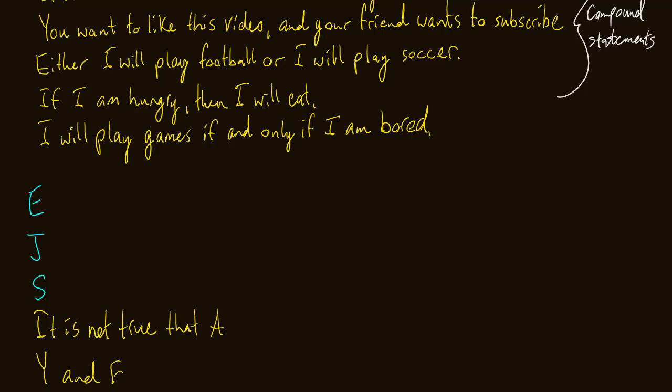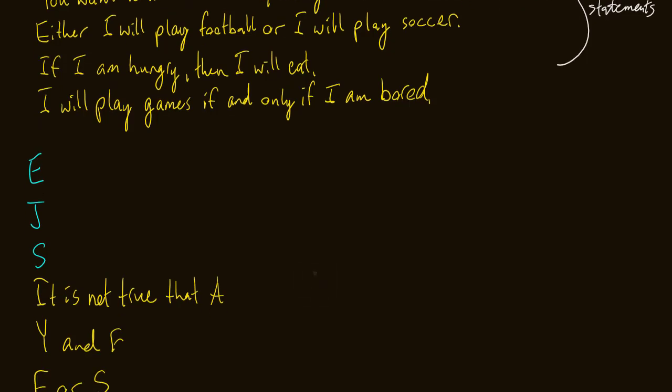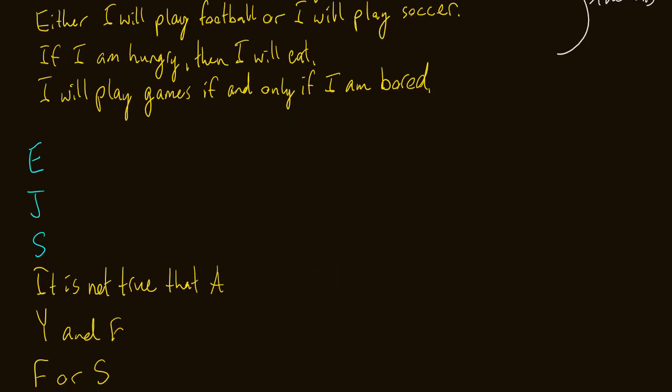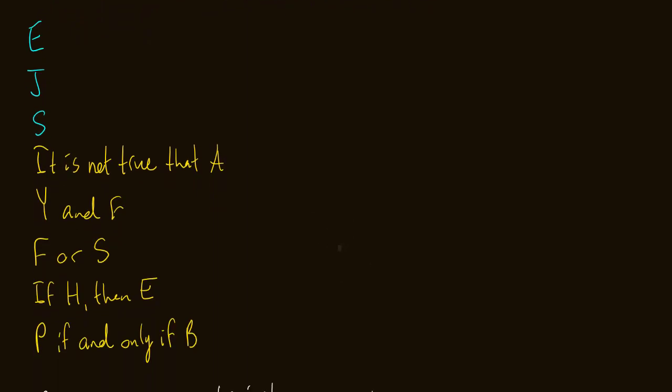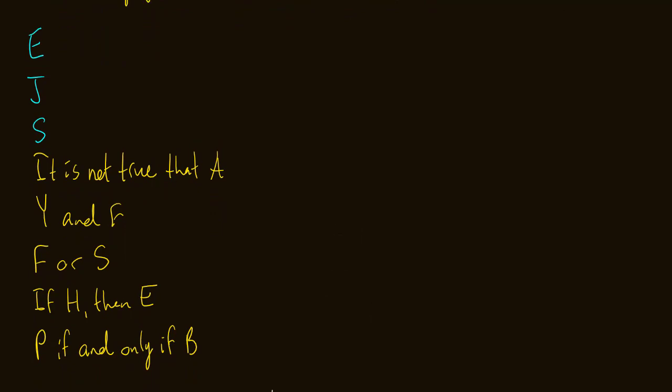Either I will play football or I will play soccer. I'll do F or S for that. If I'm hungry, then I will eat. If H, then E. I will play games if and only if I am bored. P, if and only if B. I'll play if and only if I'm bored. Now, we don't want all this. We don't want it is not true that, we don't want and, we don't want or, we don't want if then, we don't want if and only if, we don't want words. We just want symbols. We want to take our language and move it to simple symbols.